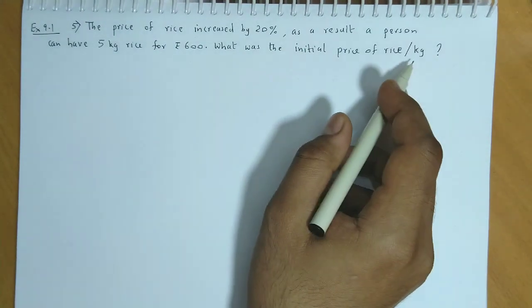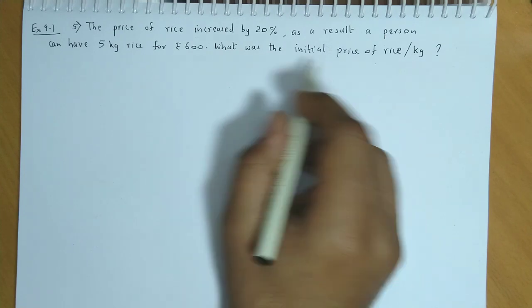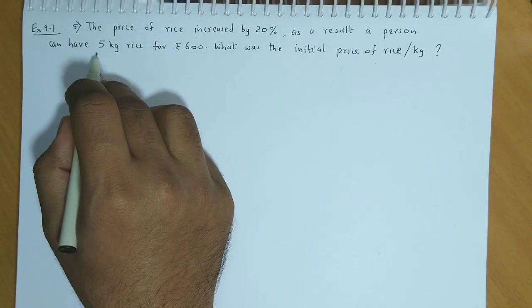What was the initial price of the rice? The current price is Rs. 600 for 5 kg.